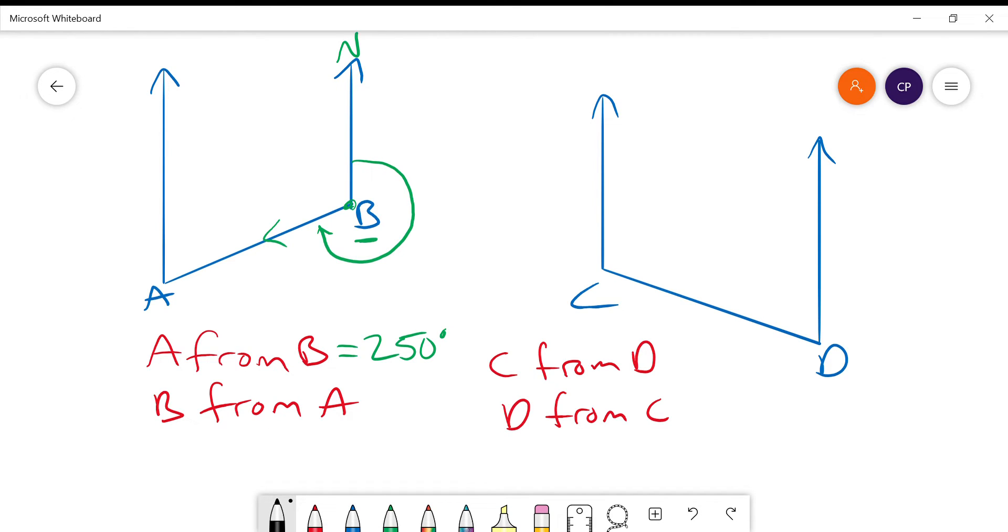We then might have a second part of the question that asks us how to get to B from A. So again from A, so this time we're looking at A. We put in our north to remind us that we're measuring from the north line.